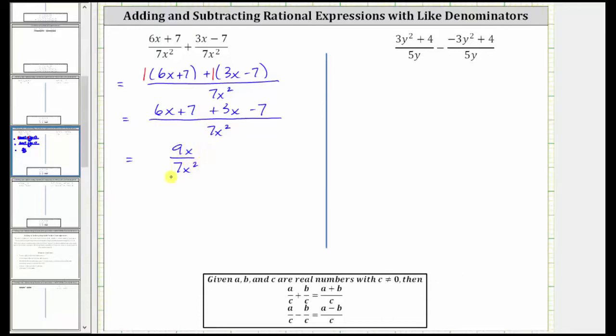But notice how we can simplify here because we have a common factor of x between the numerator and denominator. If it's helpful, we can write 9x as 9 times x, and 7x squared as 7 times x times x, so that we can see the common factor of x. And x divided by x simplifies to 1, and therefore the simplified sum is just 9 divided by 7x.